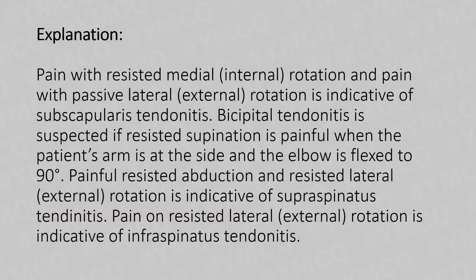Explanation: Pain with resisted medial or internal rotation and pain with passive lateral or external rotation is indicative of subscapularis tendinitis. Bicipital tendinitis is suspected if resistive supination is painful when the patient's arm is at the side and elbow is flexed to 90 degrees. Painful resisted abduction and resisted lateral or external rotation is indicative of supraspinatus tendinitis. Pain on resisted lateral or external rotation is indicative of infraspinatus tendinitis.